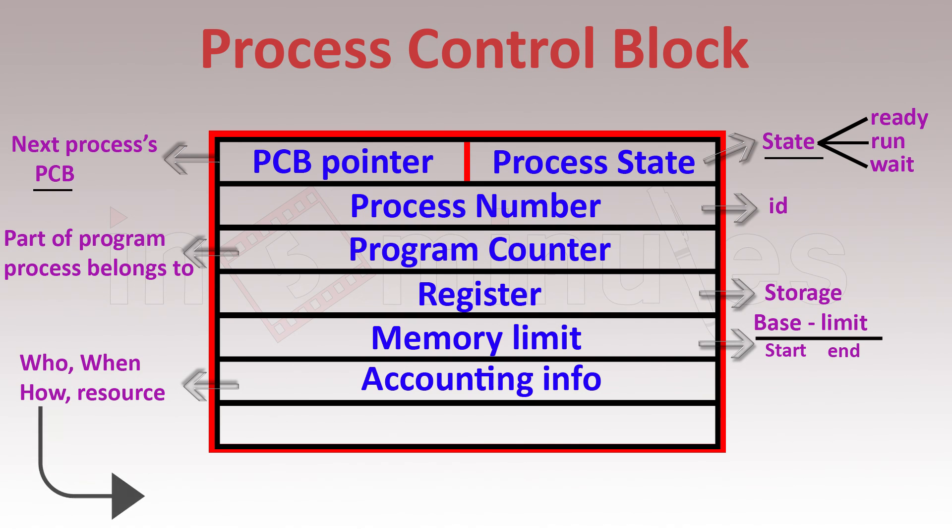Along with all this information, we do carry some extra other information like rights, date of creation, the owner, and other information. But overall, a PCB would consist of PCB pointer, process state, process number, program counter, register, memory limit, accounting info, and other needed info.